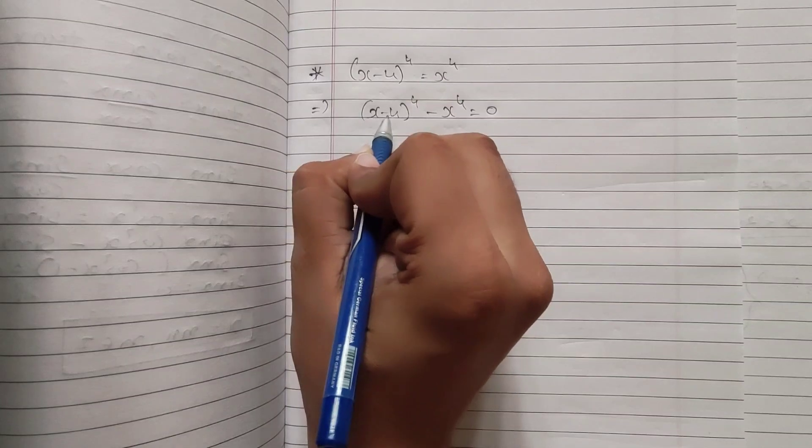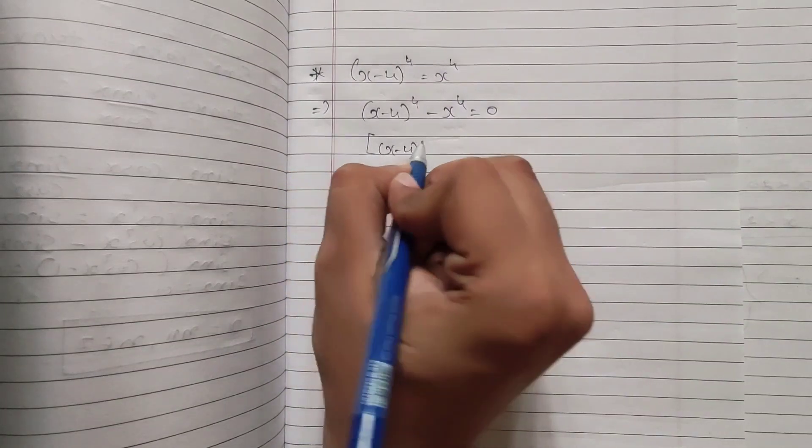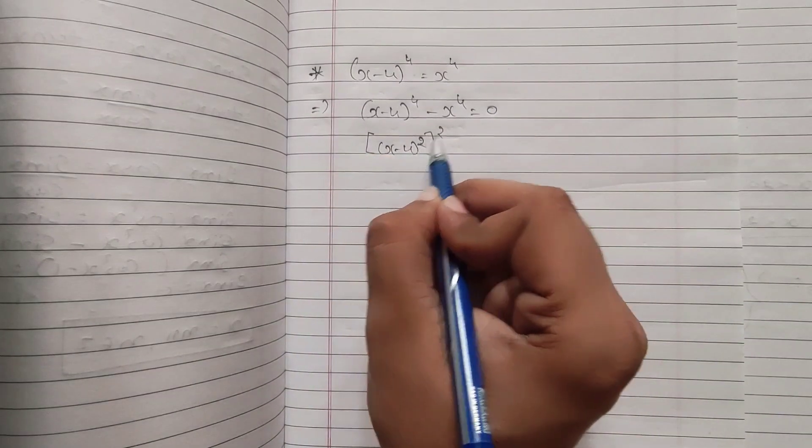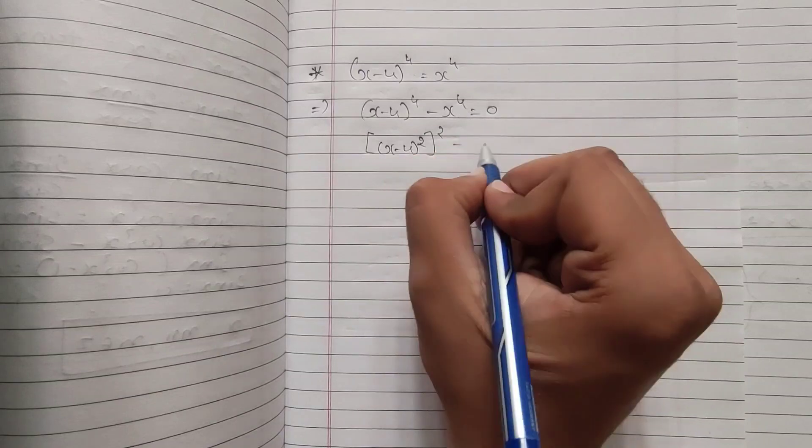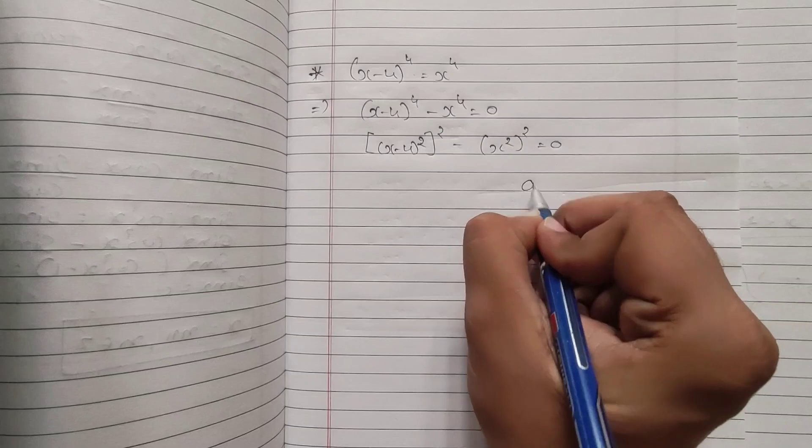Now pay attention here. I can write (x-4)^4 as [(x-4)²]², because 2 times 2 equals 4. Same way, I can write (x²)² = 0. Now there is one formula.